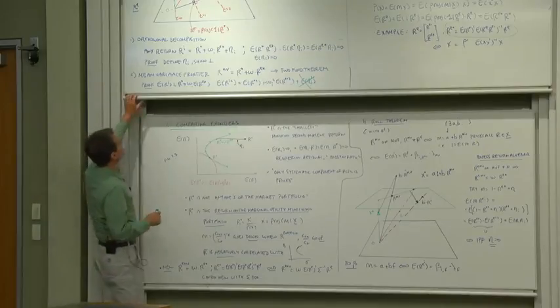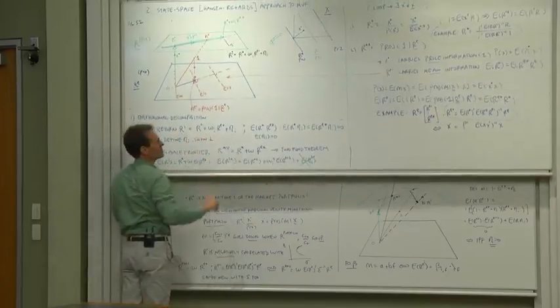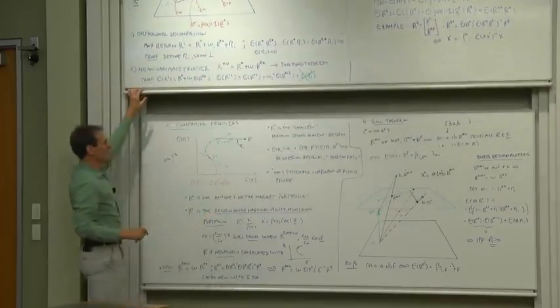Next, let's think of this three-way decomposition. Any return is r star, we star plus a residual. How does that look?